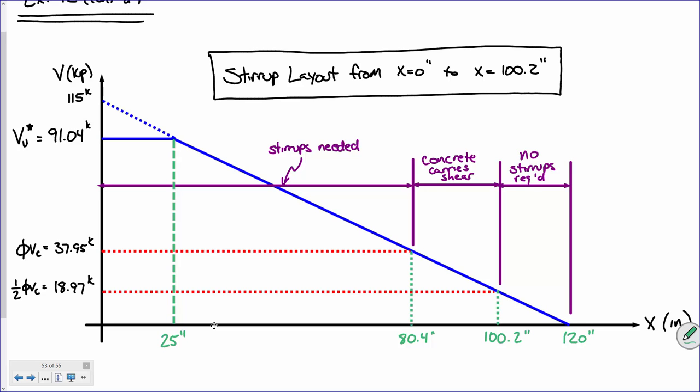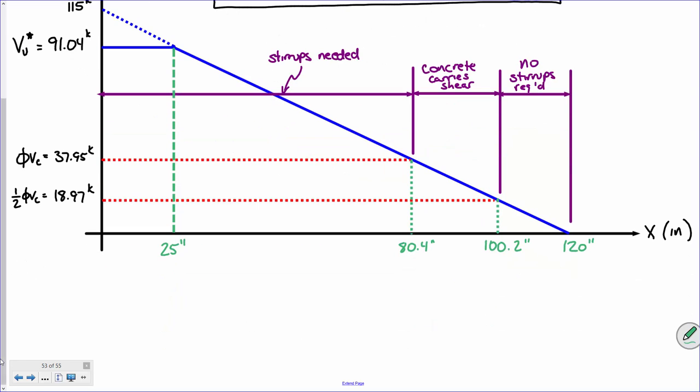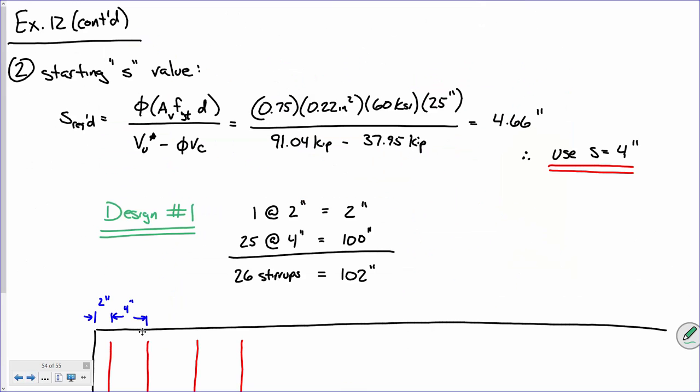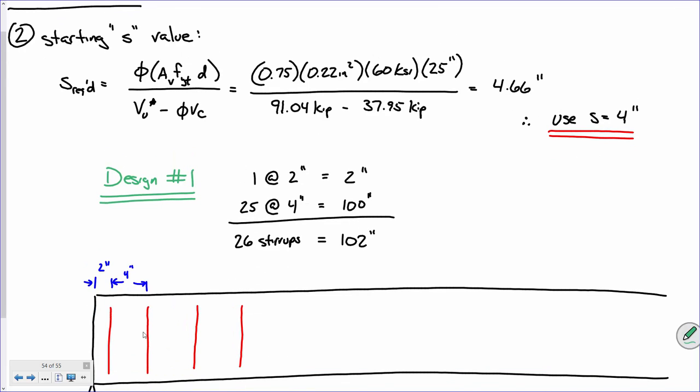We've labeled where phi VC and half of phi VC occur on the diagram, at 80.4 inches and 100.2 inches. We've identified three regions of interest: where stirrups are needed, where concrete carries the shear, and where there's no stirrups required. Our design goal is to lay out stirrups from the beginning at X equals 0 to just past 100.2 inches. That's where we concluded our example last time.